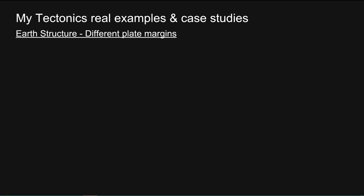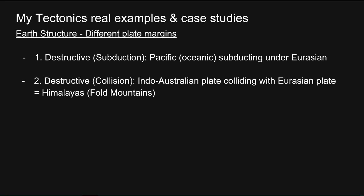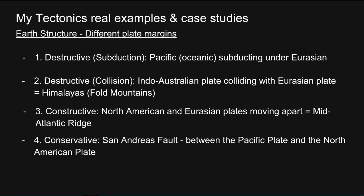For different plate margins: an example for a destructive subduction plate margin is the Pacific Oceanic plate subducting under the Eurasian plate. An example for a destructive collision plate margin is the Indo-Australian plate colliding with the Eurasian plate, forming the Himalayas, which are fold mountains. An example for a constructive plate margin is the North American and Eurasian plates moving apart, forming the Mid-Atlantic Ridge. An example for the conservative plate margin is the San Andreas Fault between the Pacific plate and the North American plate.